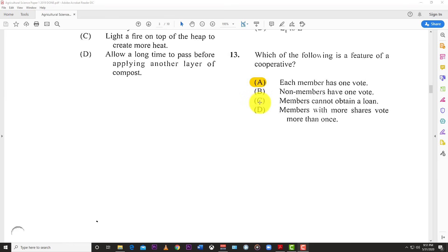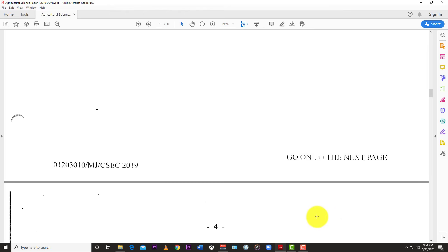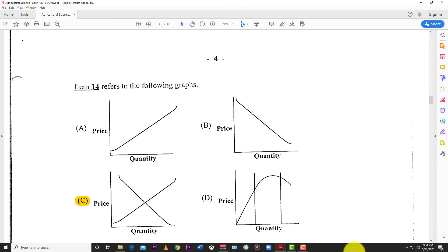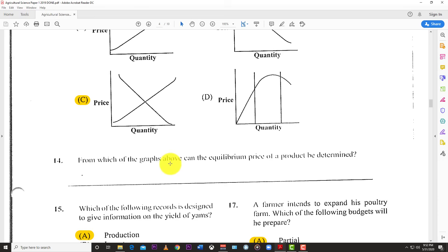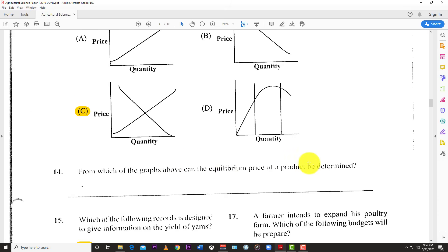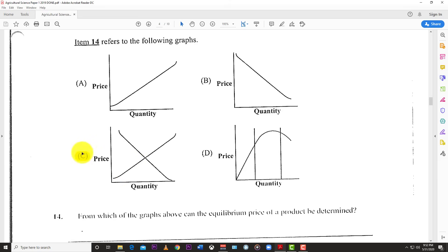Number 12 refers to the graph. During Lent, people demand more fish than any other meat. This is represented by a shift from D to D1 of the demand curve, showing an increase in demand for fish. Number 13: A feature of a cooperative is that each member has one vote. Number 14 refers to graphs A, B, C, and D. From which graph can equilibrium price be determined? The answer is C, where the demand curve and supply curve intersect, showing equilibrium quantity and equilibrium price.